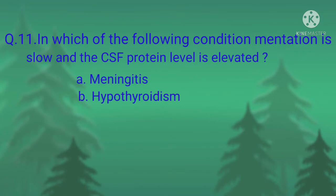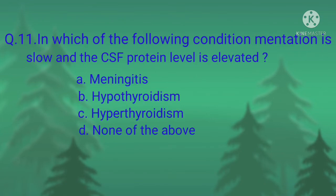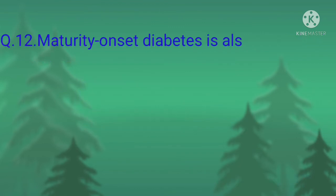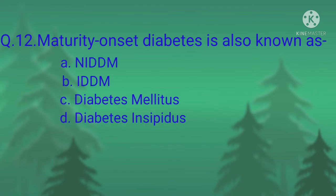Question number eleven: in which of the following conditions is mentation slow and CSF protein level elevated? Option A, hyperthyroidism; option B, hypothyroidism; option C, hyperthyroidism; option D, none of the above. The correct option is option B, hypothyroidism.